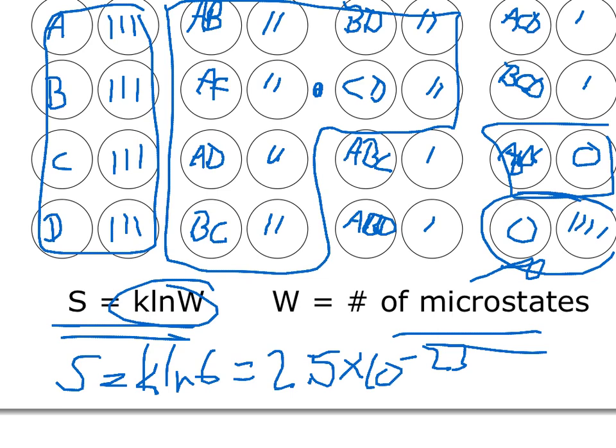Now, if we had an infinite amount of time, we could go ahead and draw out all the ways in which 10 to the 27 particles can arrange themselves into two halves of the room. Suffice it to say, the test is in January. We don't have that kind of time.